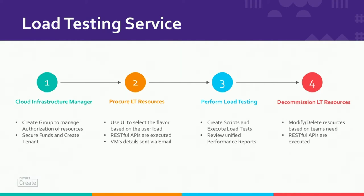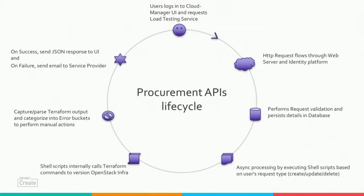I'd like to dive deeper into step two — procuring resources — and the challenges we faced. The lifecycle of resource procurement goes like this: the user logs into the UI and requests the service; the request flows through the web server and identification platform; data gets persisted in the database; asynchronous processing is done by executing shell scripts; those shell scripts execute Terraform commands; and the Terraform commands provision the VMs in the OpenStack platform. This is the critical part — sometimes the VM provisioning fails, and we had to understand what challenges arise when that happens.